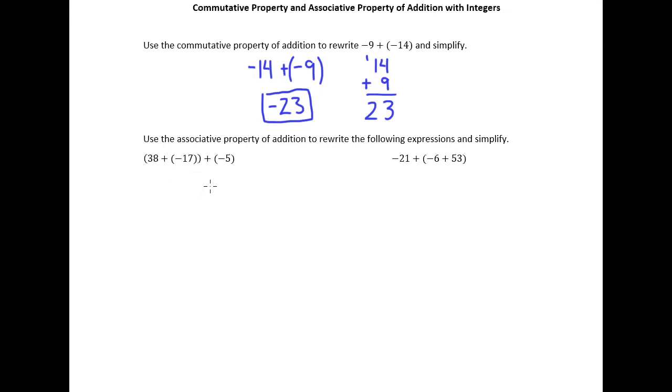So to rewrite this using the associative property, what we'd be saying is that we're going to add the second two numbers first. So now I'm going to put parentheses around -17 and -5. Now let's think about where parentheses should go for each of these individual numbers. So -17 is going to come first in here.